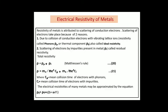An important topic is electrical resistivity of metals. Resistivity is due to scattering of conduction electrons. There are two reasons: first, due to collision of conduction electrons with vibrating lattice ions—this resistivity is called phonon resistivity, denoted ρ_p or the thermal/temperature component ρ_t, also called ideal resistivity. Second, scattering of electrons by impurities present in the metal, denoted ρ_i, called residual resistivity. Total resistivity: ρ = ρ_p + ρ_i = (m_e / n e² τ_p) + (m_e / n e² τ_i), where τ_p is the mean collision time with phonons and τ_i is the mean collision time with impurities.